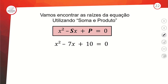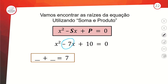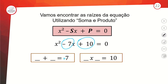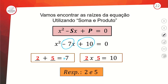Vamos encontrar as raízes pelo soma e produto de x² menos 7x mais 10. A gente precisa de dois números que somando dão o sinal contrário do B — como B é menos 7, somando dão 7 — e multiplicando dão o C = 10. Pensando: 1 vezes 10 dá 10, mas 1 mais 10 não é 7. Então 2 e 5: 2 vezes 5 = 10 e 2 mais 5 = 7. Fechou — x1 = 2 e x2 = 5.